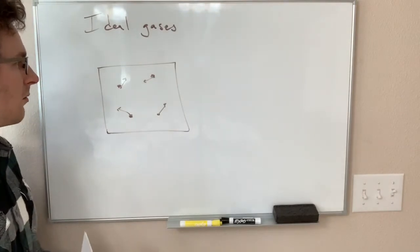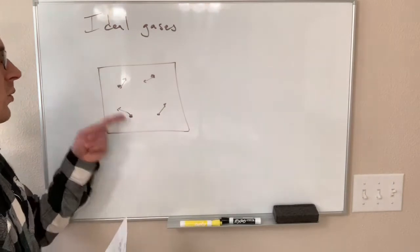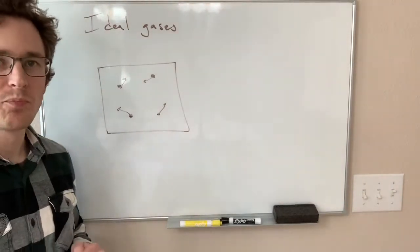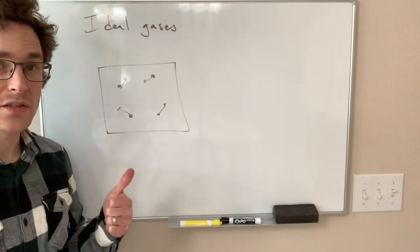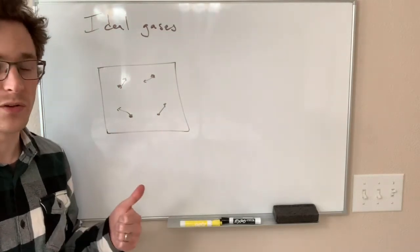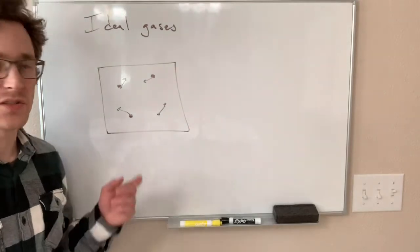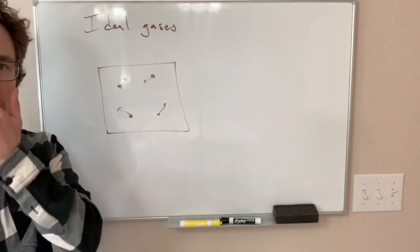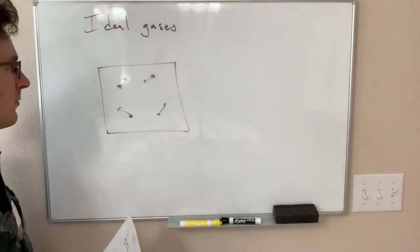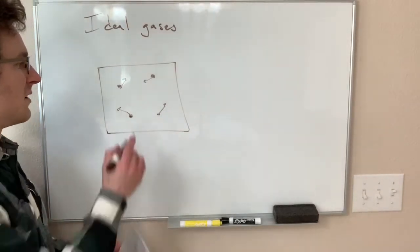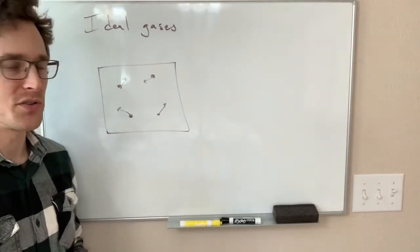The only things that we need to know about these particles in order to derive the ideal gas law is very simple. Number one, they do not collide with each other, and they are not attracted to each other. They exist kind of independently of their neighbors, so the behavior of the ideal gas does not depend on any particular interactions between any of the particles in there.